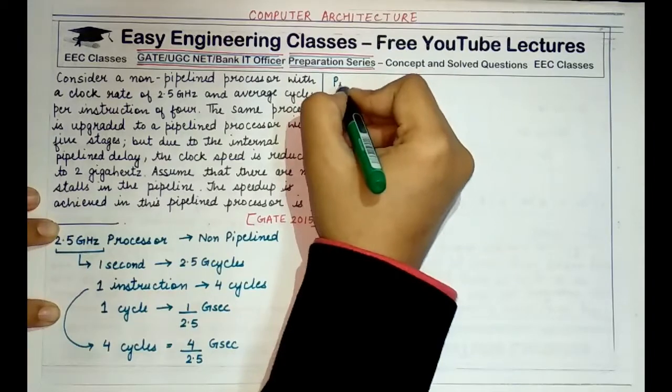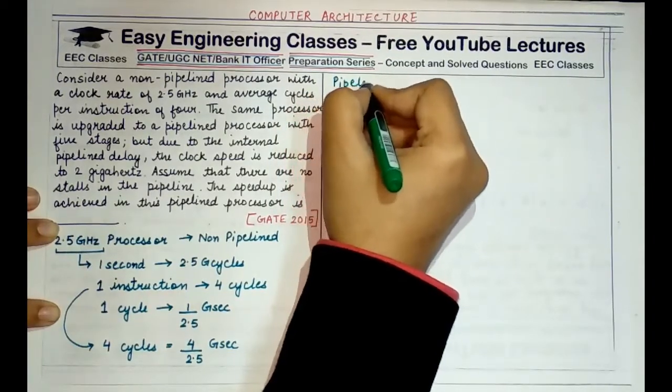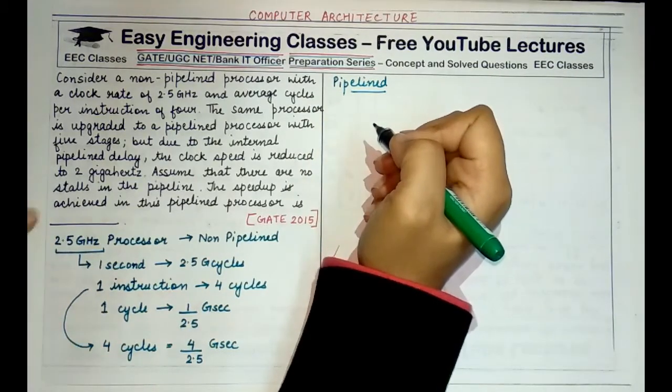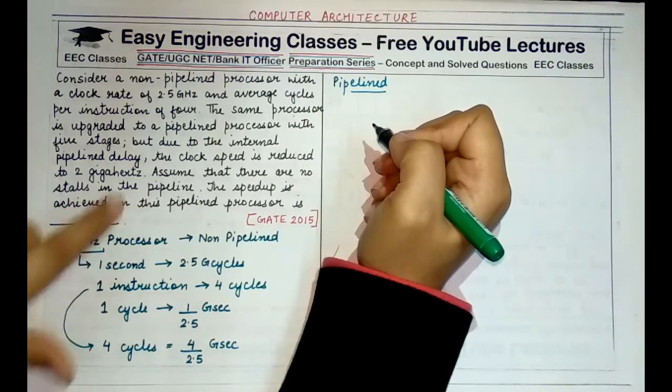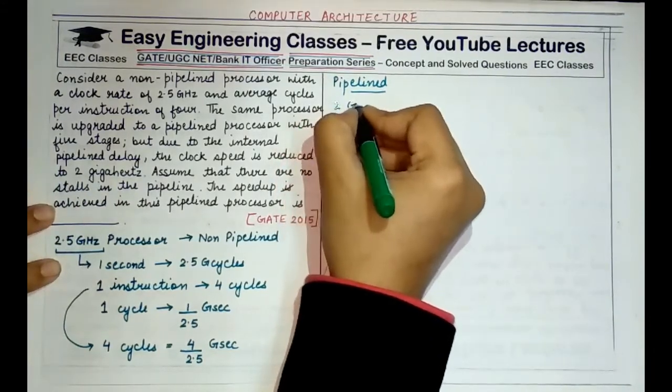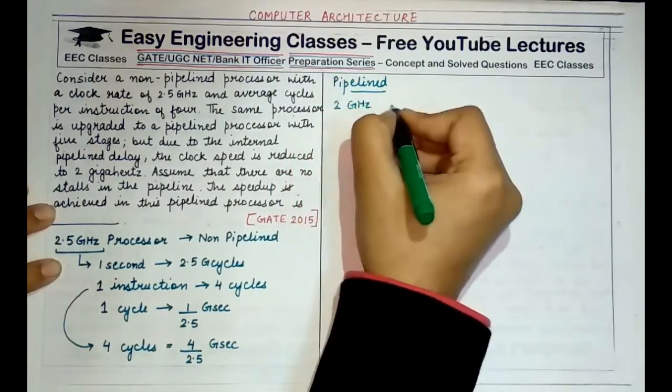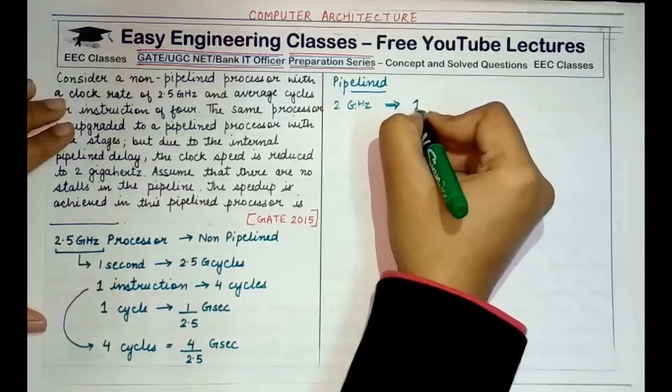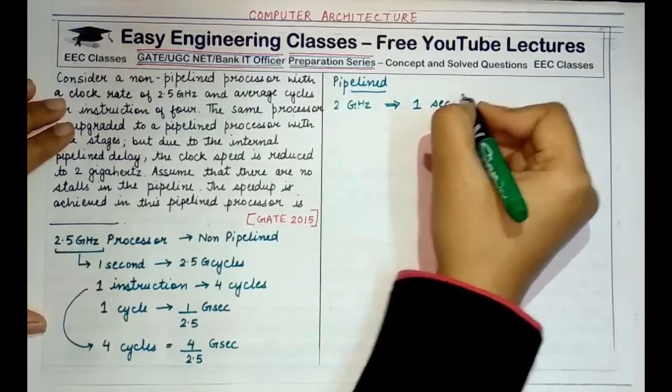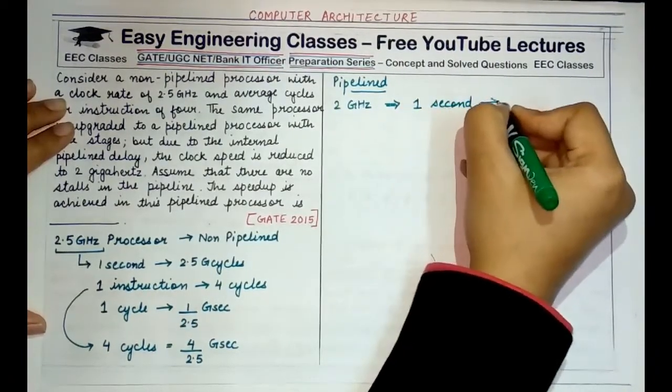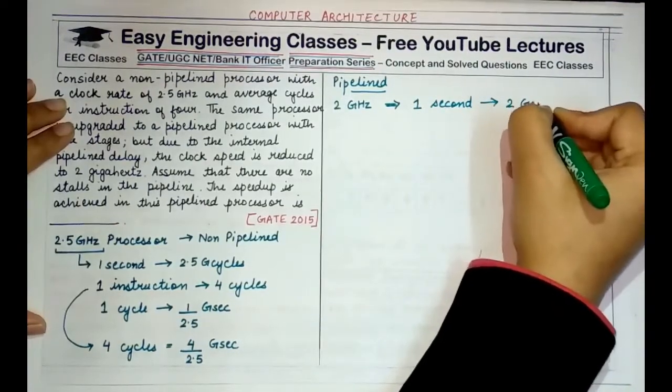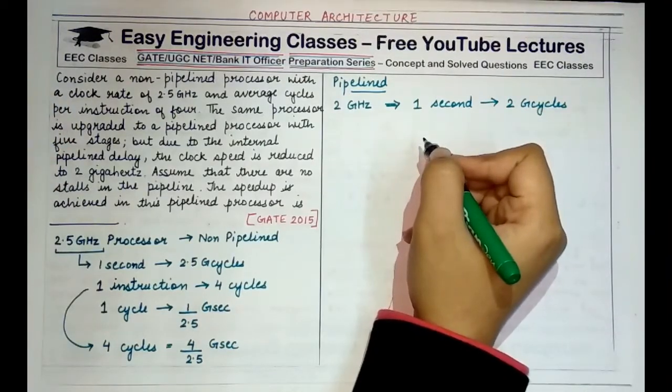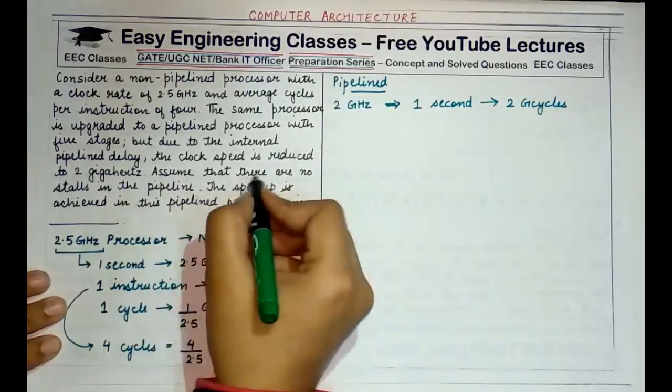Now, when this processor has been converted into a pipeline processor, what is the scene? Now it is given to you that the processor is 2 GHz. So the specification is 2 GHz which means that in one second 2 GHz cycles are now completed. So 2 GHz cycles are completed. And it is also specified that there are no stalls.